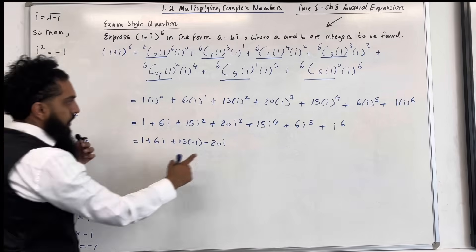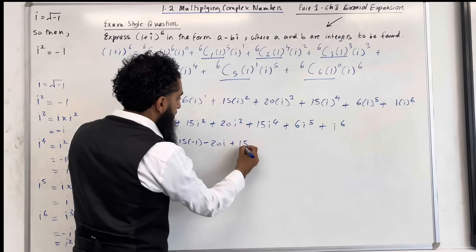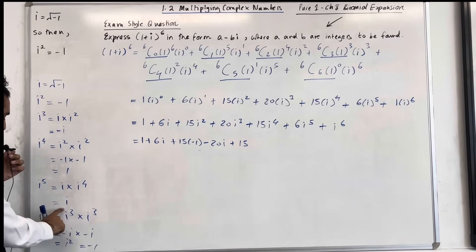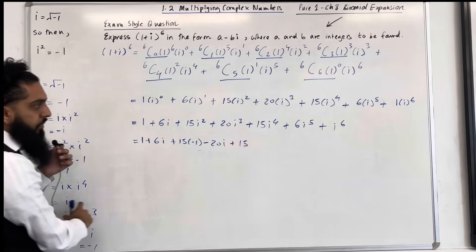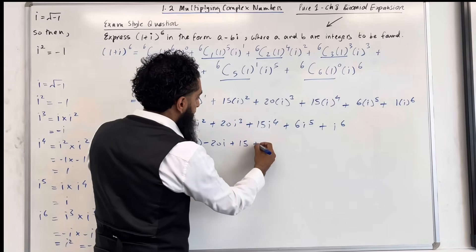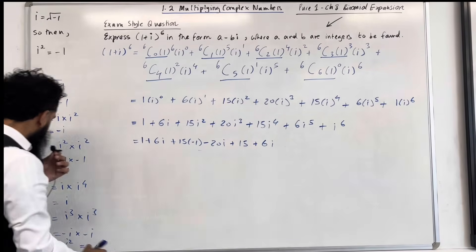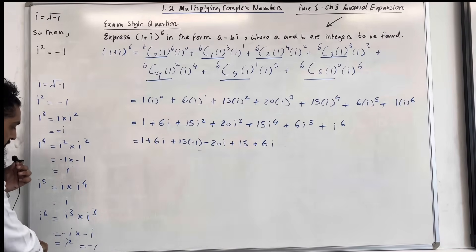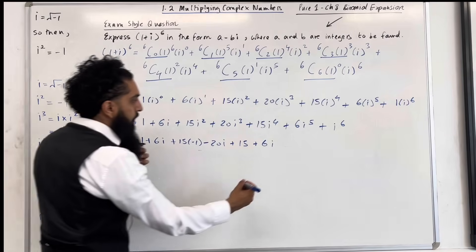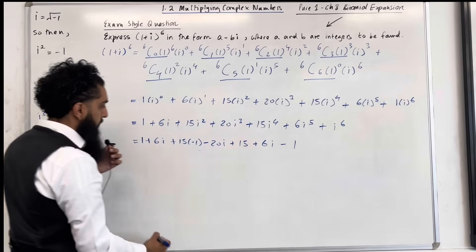And i to the power 4 is 1, so that term becomes plus 15. i to the power 5 is just i, so this term becomes plus 6i. And i to the power 6 is negative 1, so we've got negative 1 at the end.